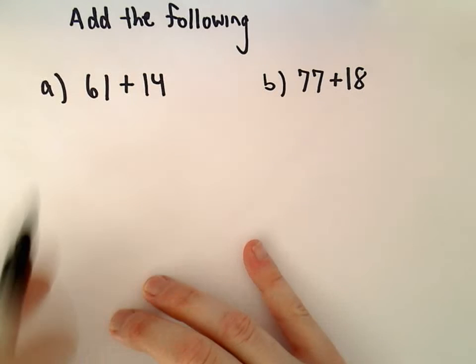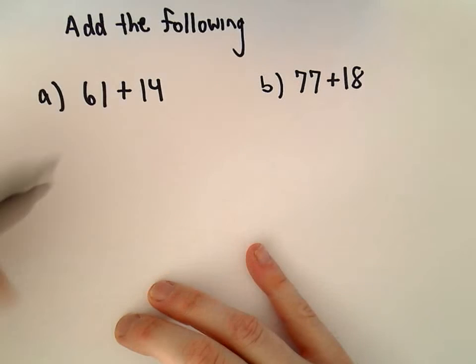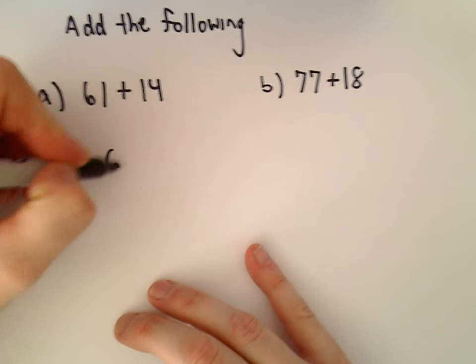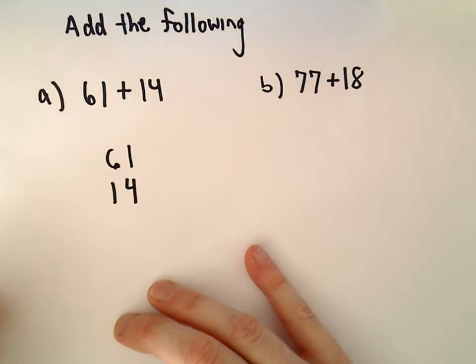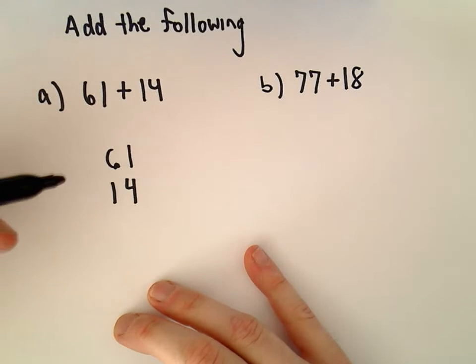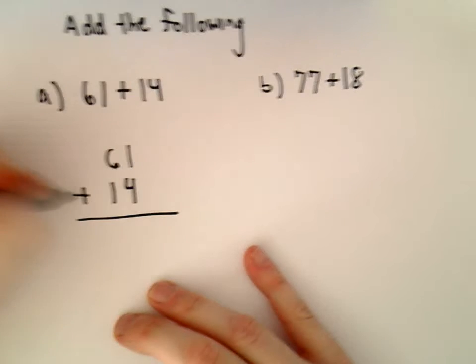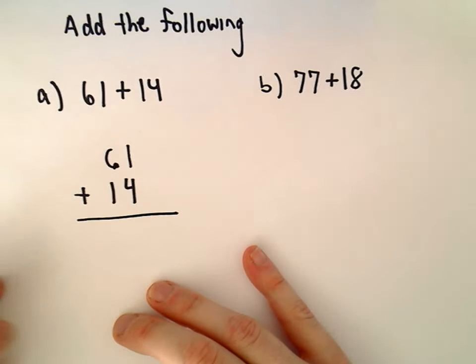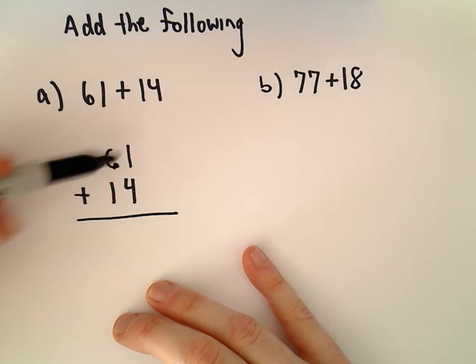So in part A here we've got 61 plus 14 and what I like to do when I add these is write them vertically. I've got everything lined up in the sense that I have all the ones in a column and all the tens in another column. And when we add these, if we have to carry a digit to the next column, we'll do so, but other than that, hopefully relatively straightforward.